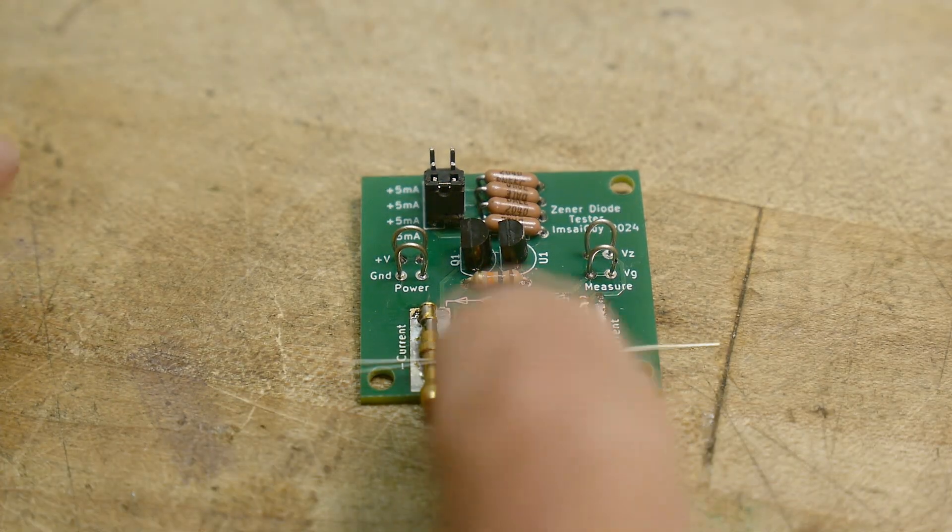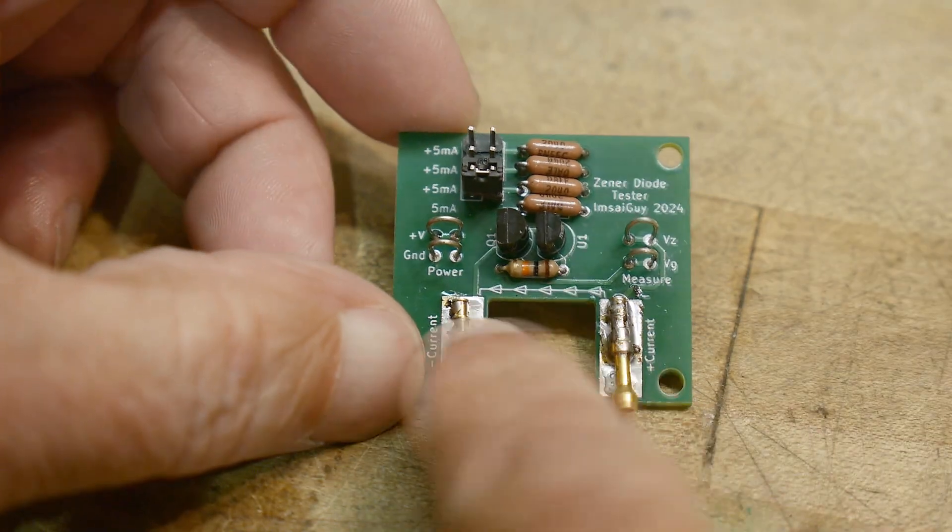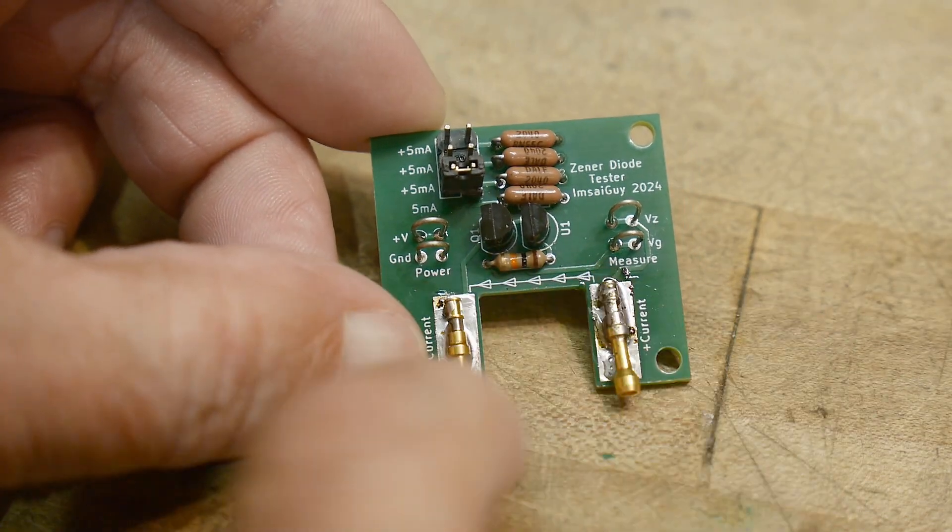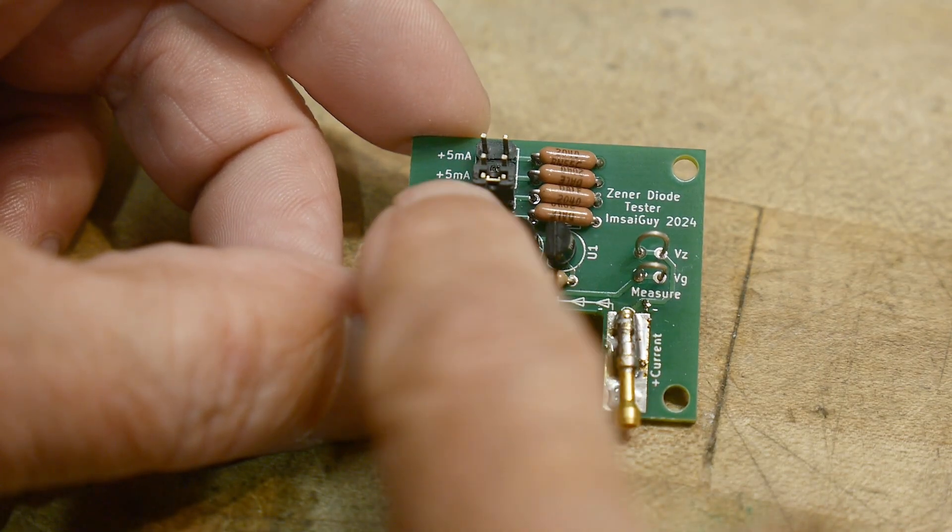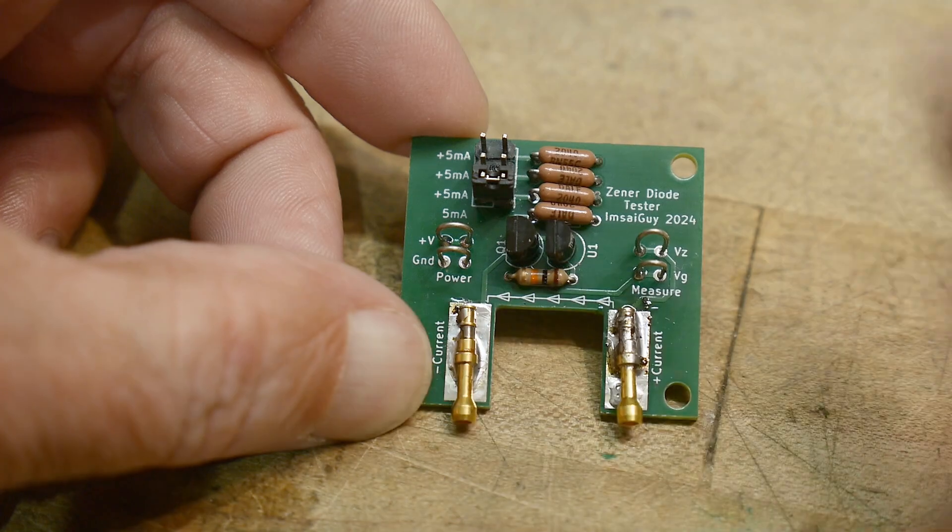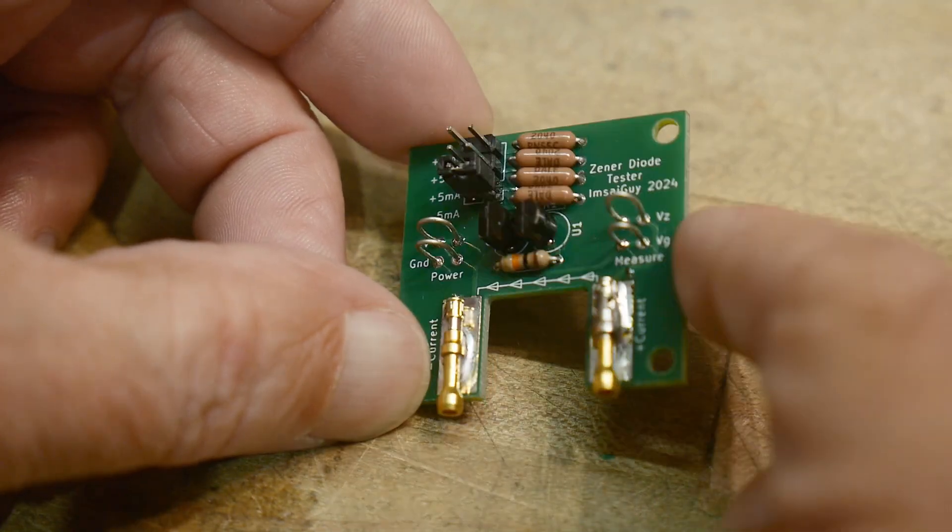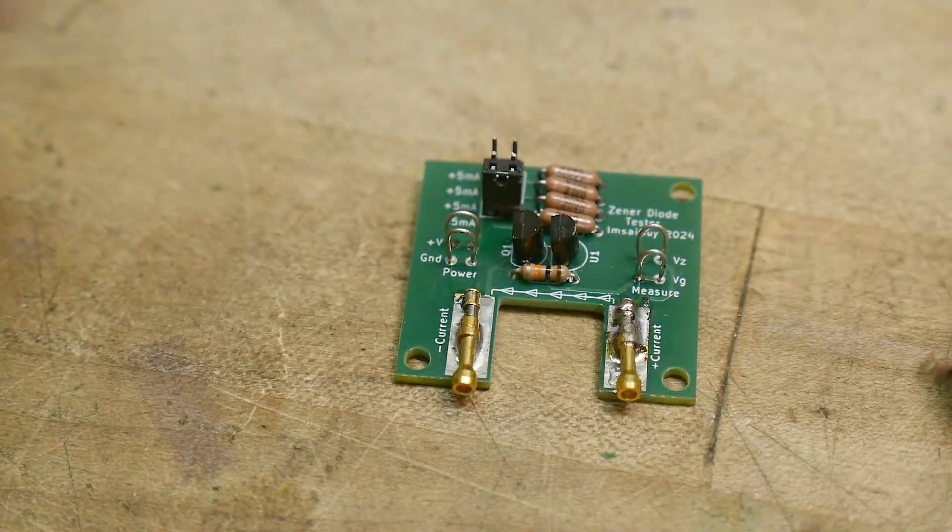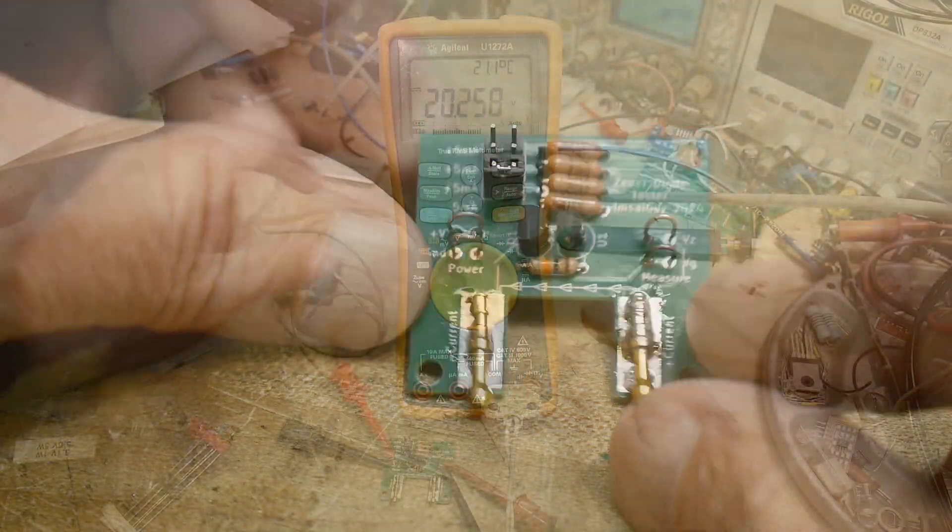and the arrows tell you which way the current goes. The current's going this direction, so you would put the Zener pointing the opposite direction, and then you put in some voltage on the input, enough to turn on your Zener, and then you can measure the Zener voltage over on this side. So let me go find some Zener diodes, and we'll measure some and see how it works.